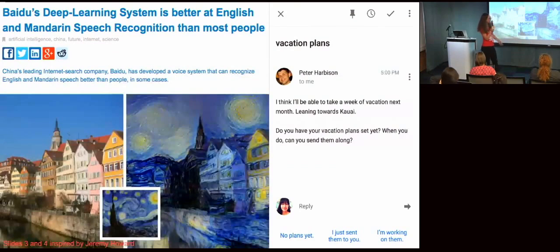And then art. On the left is a picture of some houses next to a canal. In the center is Van Gogh's Starry Night. And on the right is a new piece of artwork generated by deep learning, combining the two.